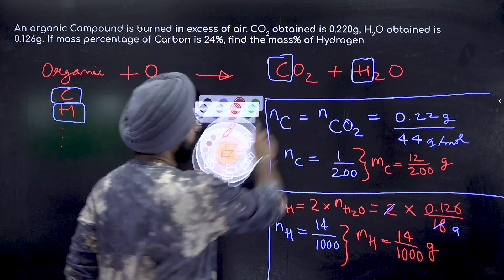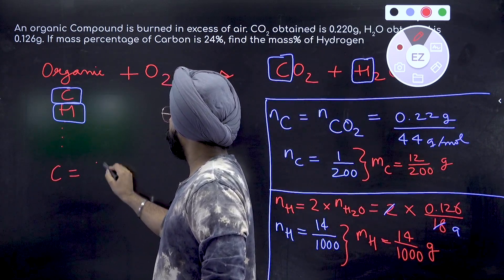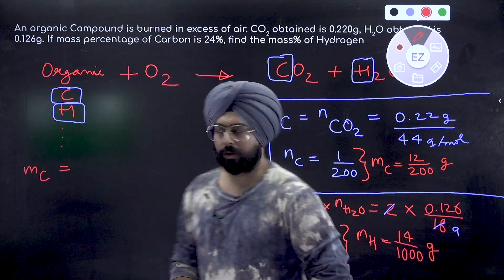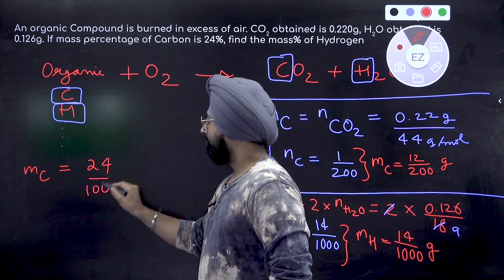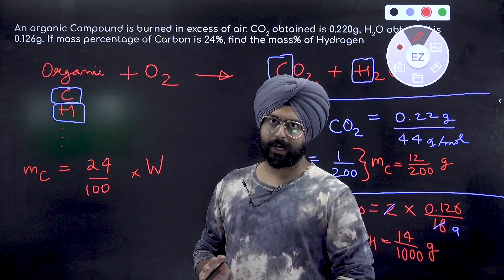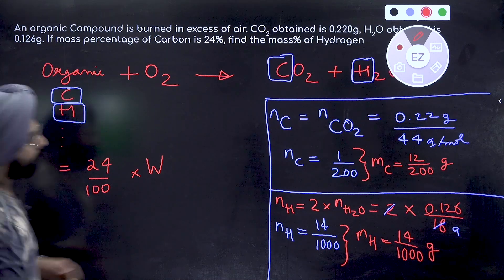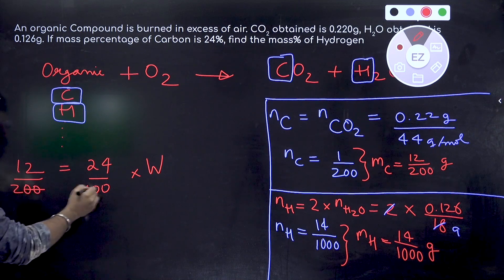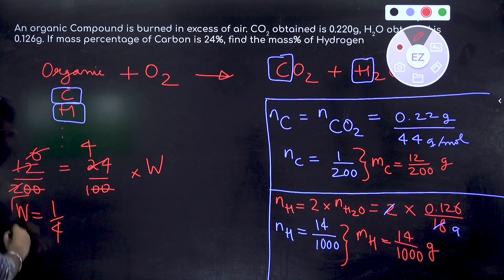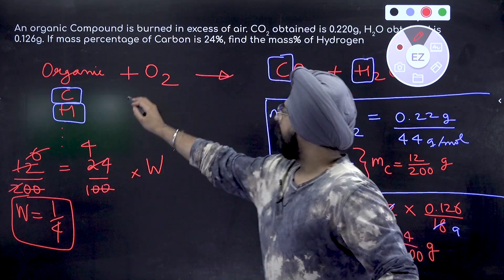It is given that carbon is 24% of the total sample, so the mass of carbon equals (24/100) × W, where W is the weight of the organic compound. Substituting the calculated mass of carbon — 12/200 — and setting it equal to (24/100) × W, we solve to find W = 1/4 grams.